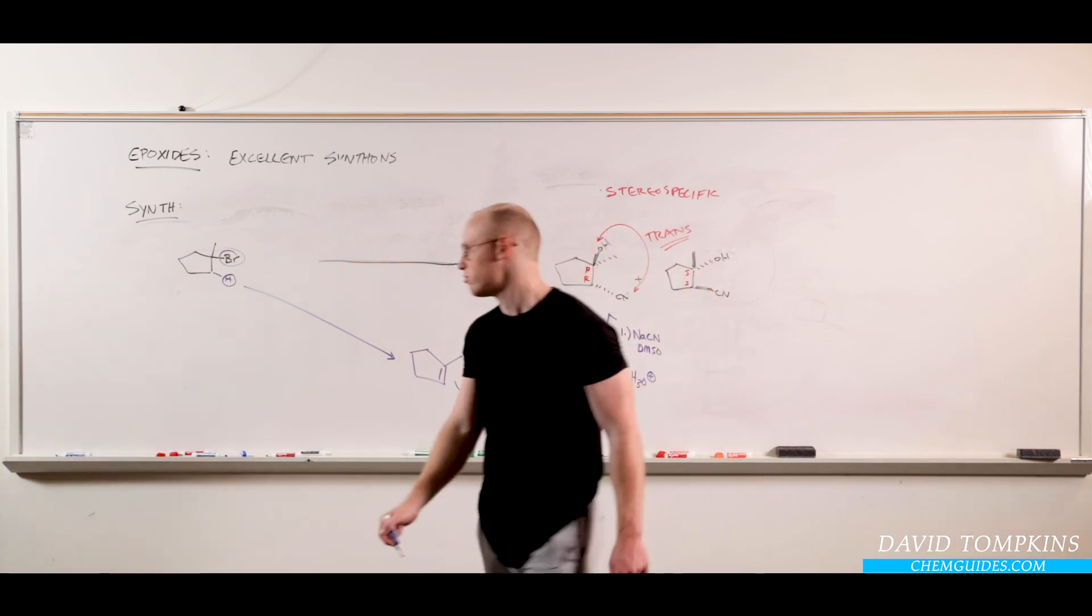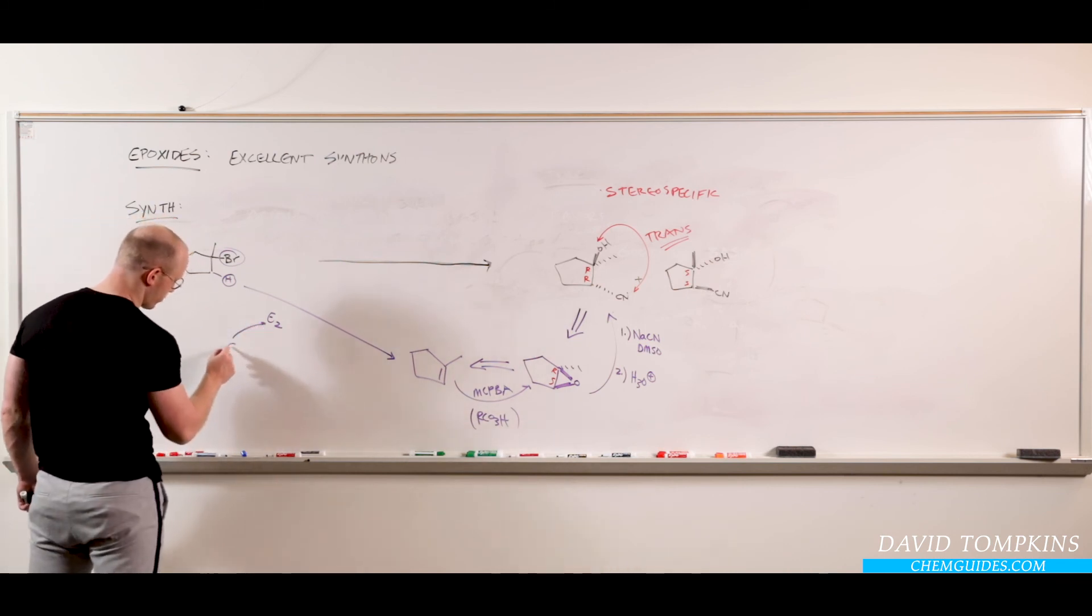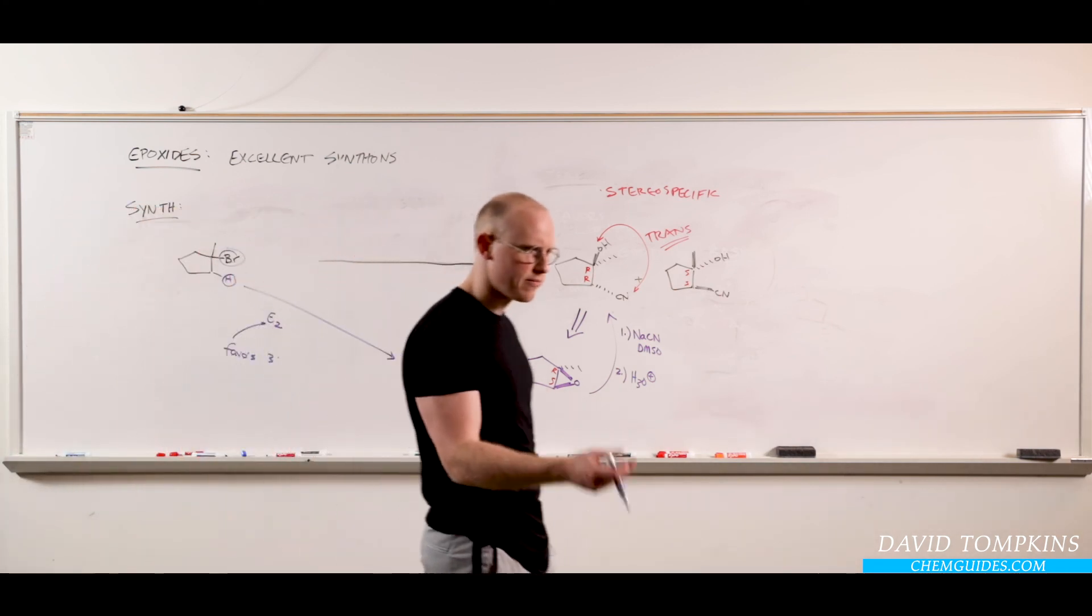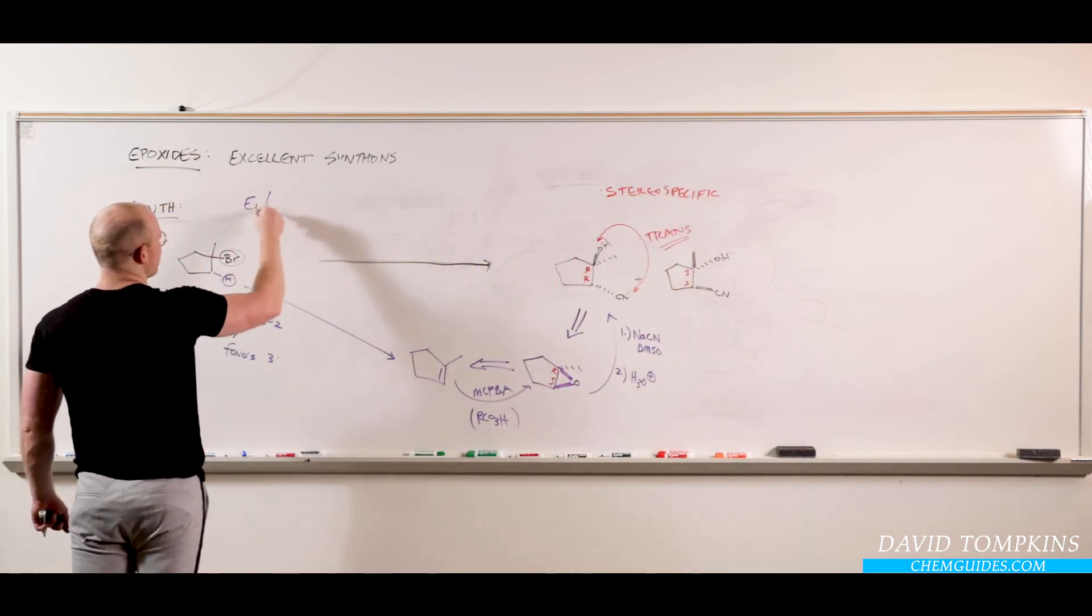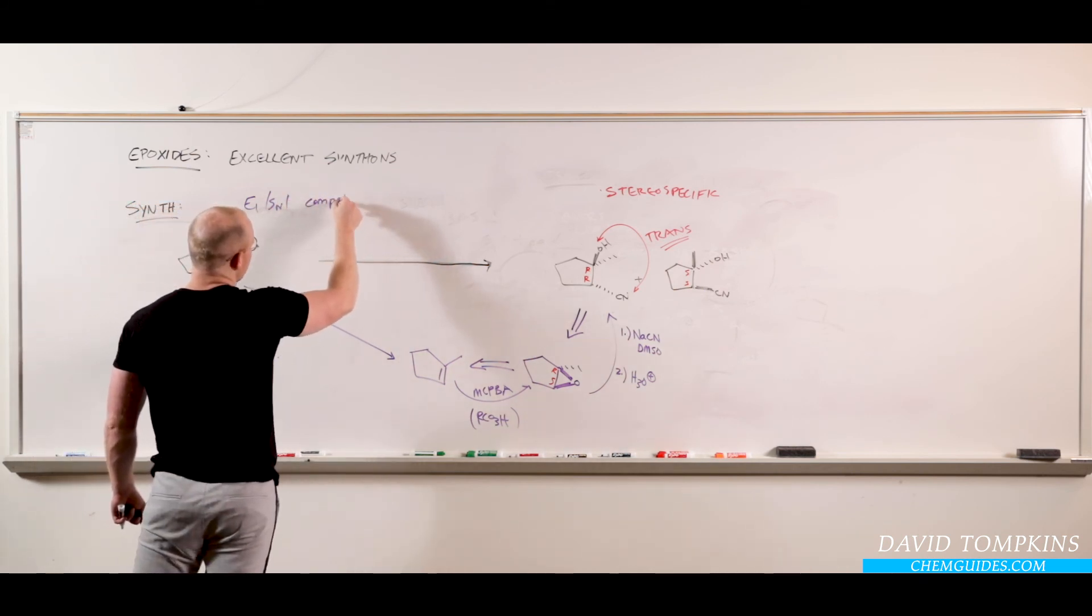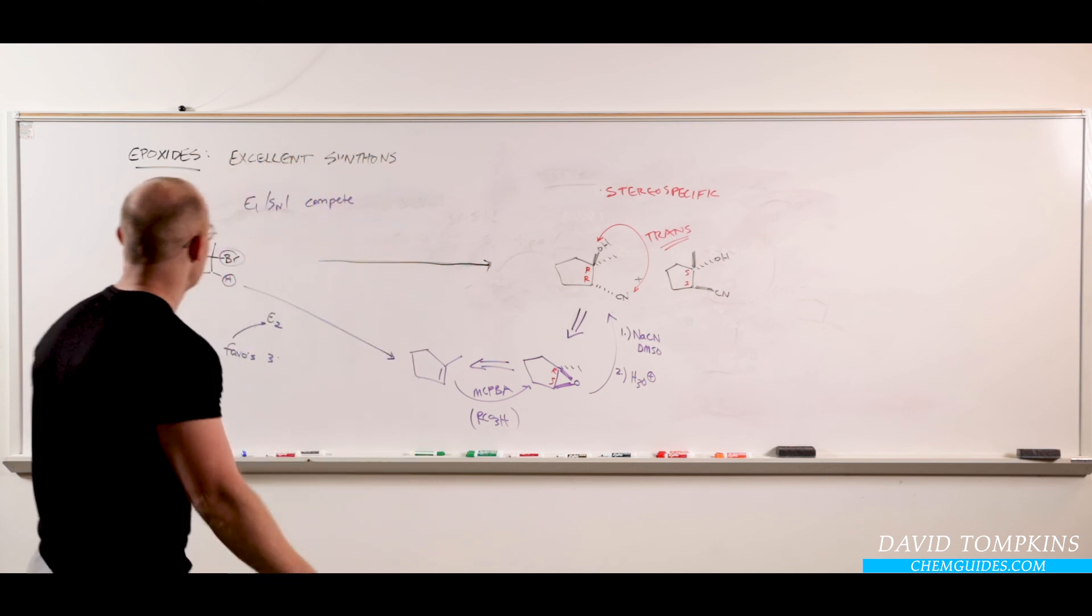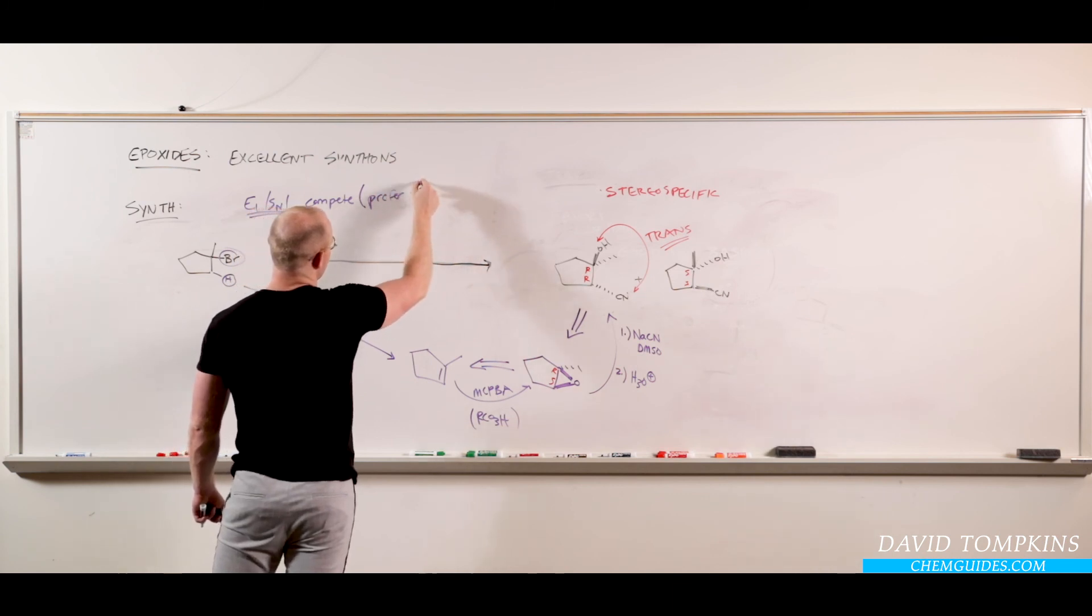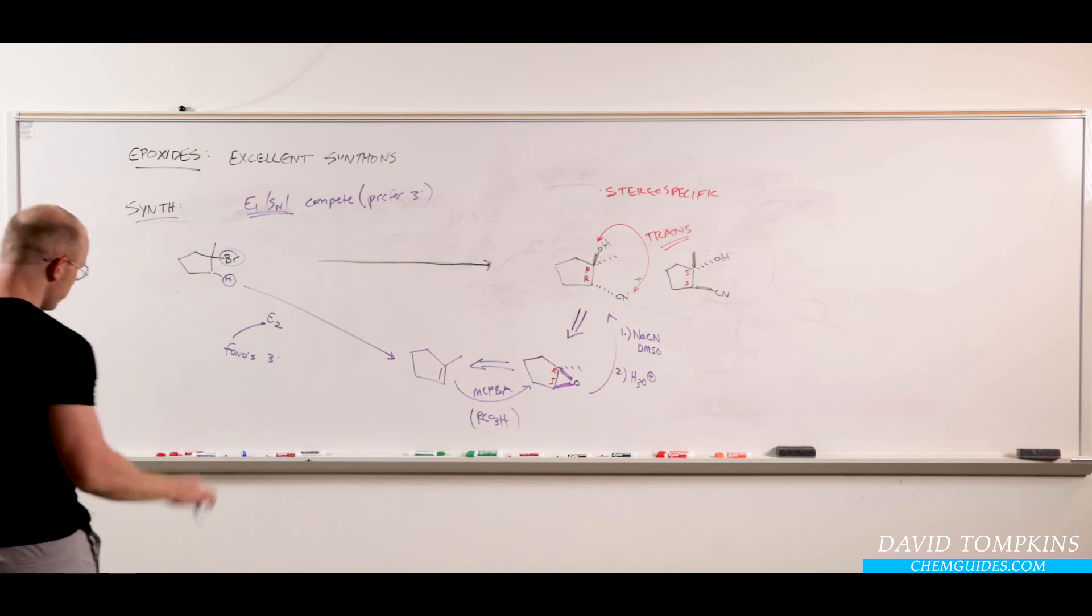And it's better to do E2 than E1 because E2 favors tertiary. Now E1 also favors tertiary, right? Carbocations form faster, but E1 and SN1 compete. So I try not to rely on those in synthesis because you look at a mixture of products. E1 and SN1 both form a carbocation. They both have the same rate-limiting step. It's only what happens to the carbocation that differs. So because they compete, they both prefer tertiary, it's hard to control which one is major versus which one is minor. Temperature helps, but it's not perfect.